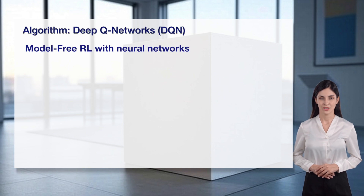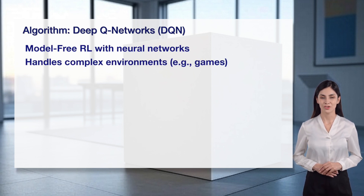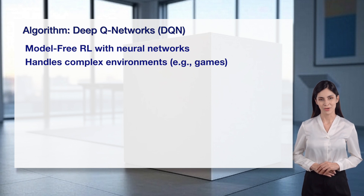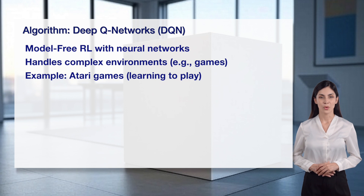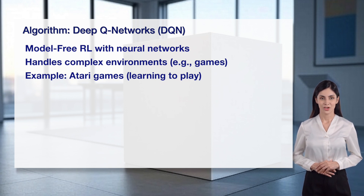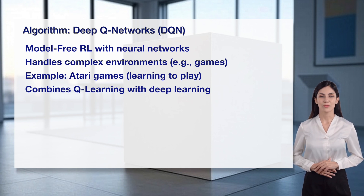Deep Q-Networks, or DQN, is a model-free RL algorithm that uses neural networks to handle complex environments. It's an advanced version of Q-learning, capable of learning directly from raw data, like game pixels. For example, DQN has been used to teach agents to play Atari games, like Breakout, achieving human-level performance. It combines Q-learning with deep learning to process large state spaces, making DQN powerful for real-world applications with high complexity.